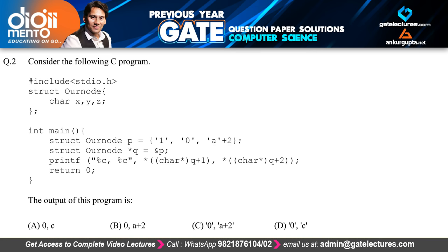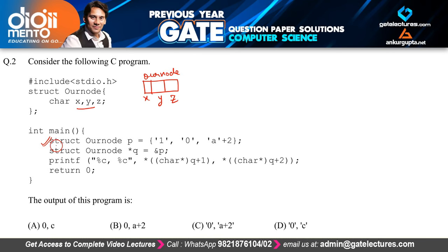Now let us look at question number 2, which is a C programming question using structures. We will have pointers and a printf statement, and they are asking for the output of this program. The program has a structure called 'our_node' with three character variables x, y, and z. In the first case, struct our_node P is initialized with values 1, 0, and 'A' + 2, where 'A' is a character and 2 is an integer.